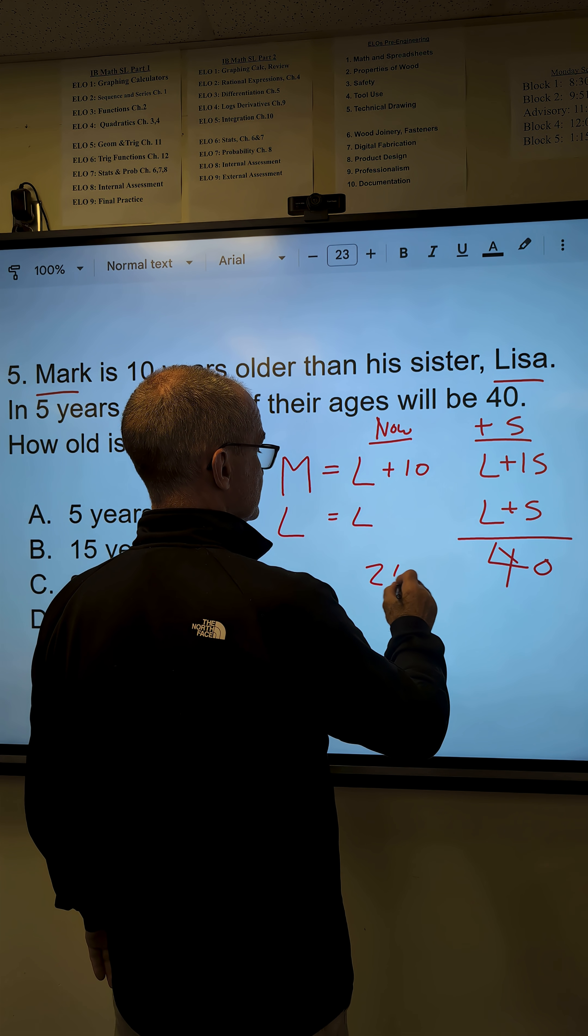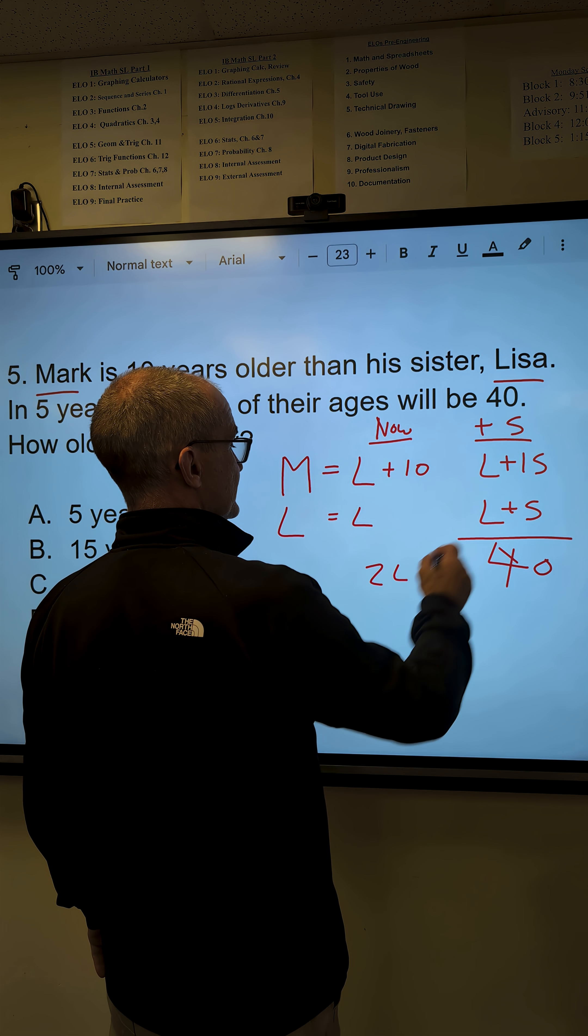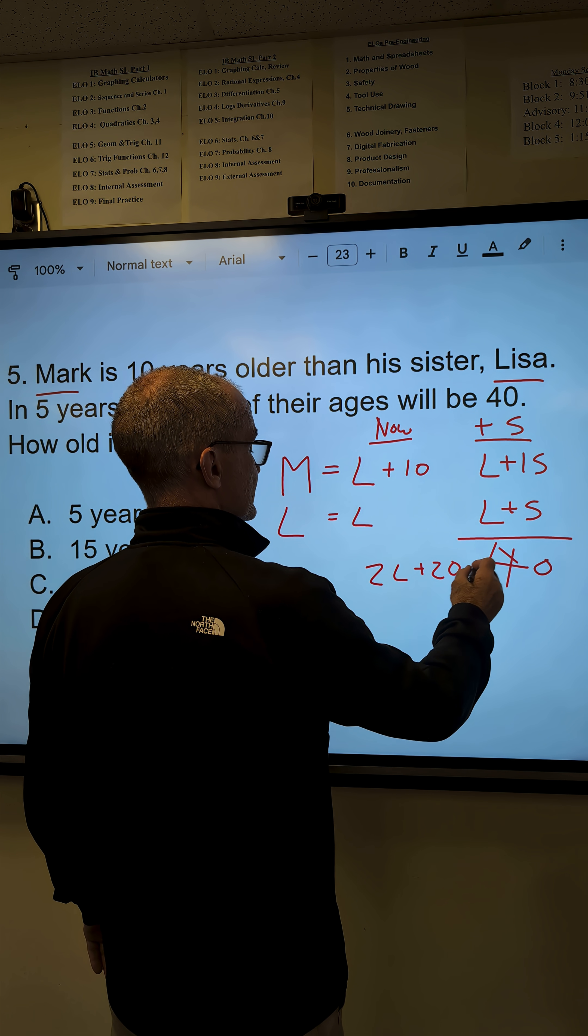L plus L is 2L. 15 and 5 is 20, is equal to 40.